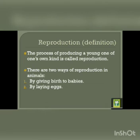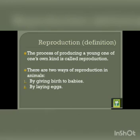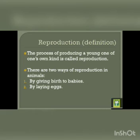Dear students, as we all know that no living being lives on earth forever, yet life on earth continues. What is it that makes life continue? There is a natural process in animals to continue life on earth, that is called Reproduction. The process of producing a young one of one's own kind is called Reproduction. There are two ways of reproduction in animals: one is by giving birth to babies and the other is by laying eggs.